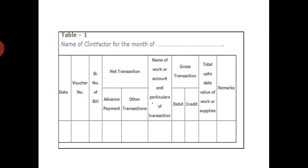If anything has happened in the contractor ledger which is kept in the government offices, he has to keep it securely and show it whenever there are financial wrong calculations or financial wrong billings. This contractor ledger consists of the date, voucher number, serial number of the bill, net transactions such as advance payment, other transactions, name of the work or account, particulars of the transactions, and name of the bill or NAFTA details.